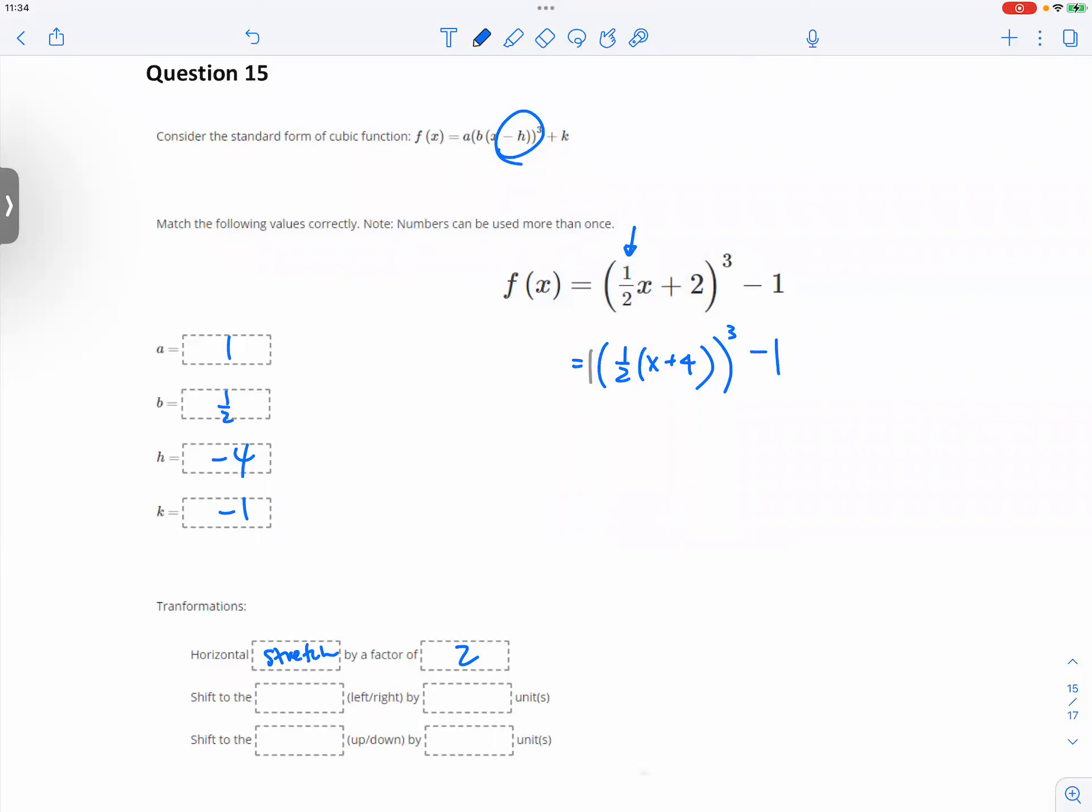You shift to the left or right. It's going to be shift to the left for 4 units. And then you shift down for 1 unit. Shift down for 1 unit.